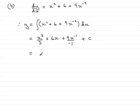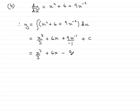Tidying this up: the first term is x³/3. The second term is 6x. For the last term, plus divided by minus is minus overall, and 9x⁻¹ is the same as 9/x. Then you have plus c.